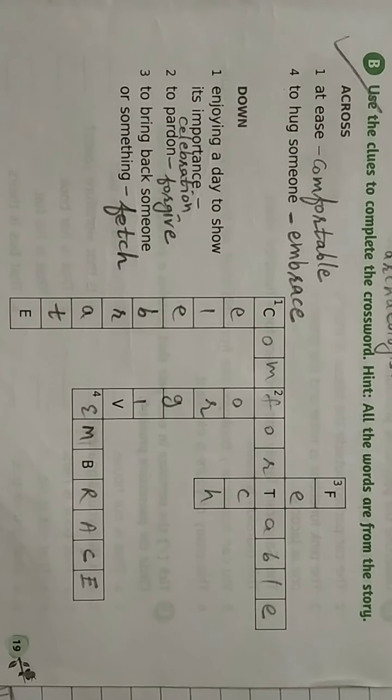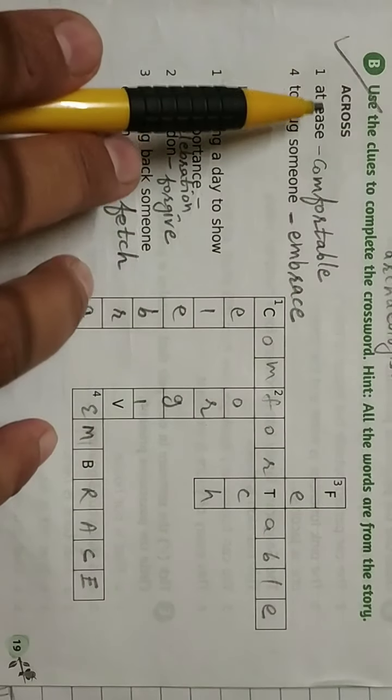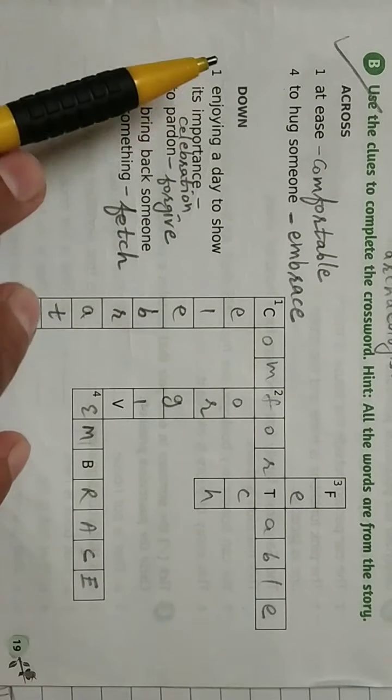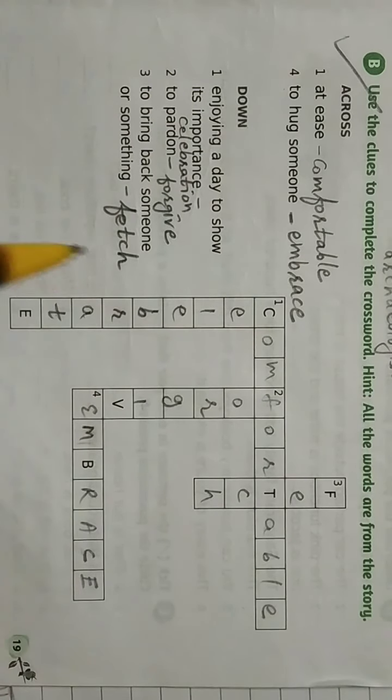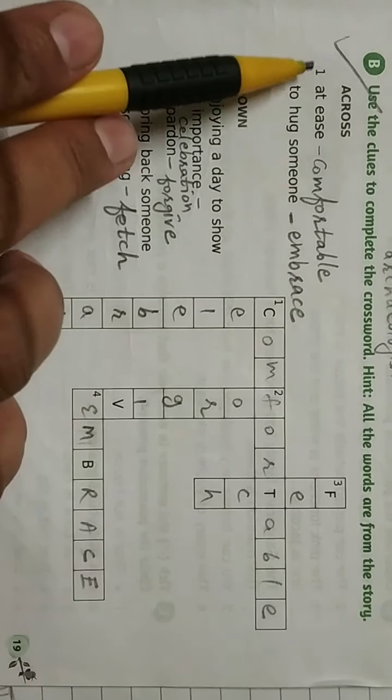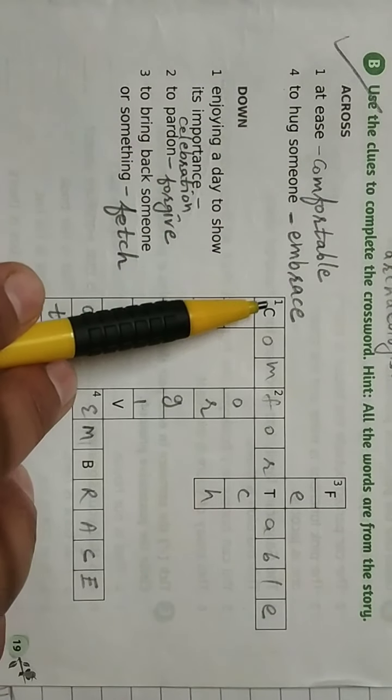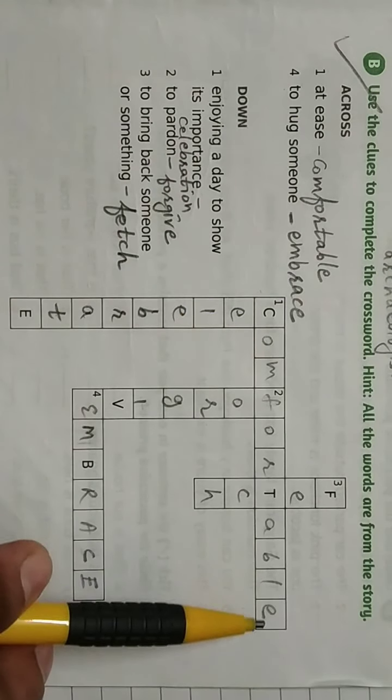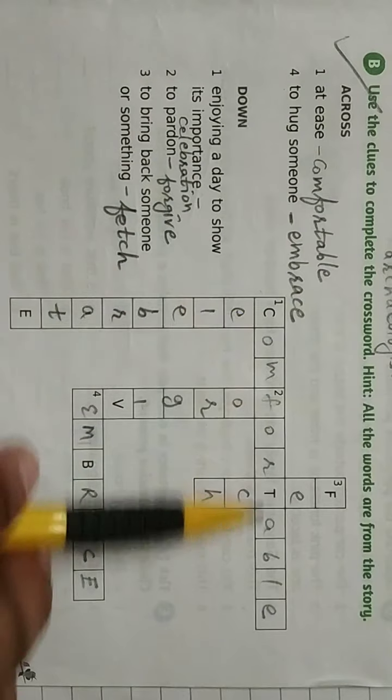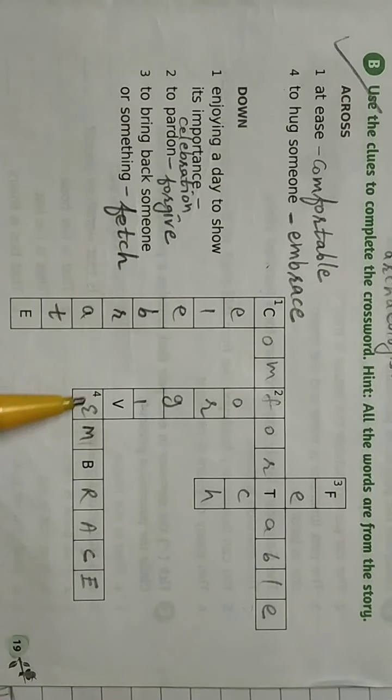Now I will help you to let you know how to fill the crossword. Across means left to right. Down means top to bottom. Like the first one: at ease, comfortable. Across, one: comfortable. Four: to hug someone, embrace. Four, embrace, down.